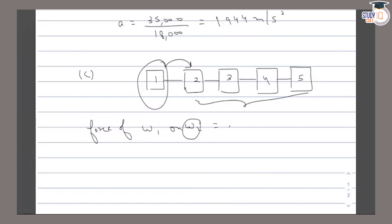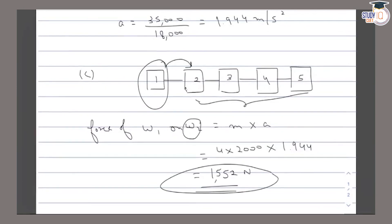The force is mass times acceleration. For 4 wagons, that's 4 into 2000, times the acceleration we calculated. When we solve this, the net force is 15,552 newton. So the force of wagon 1 on wagon 2 is 15,552 N.